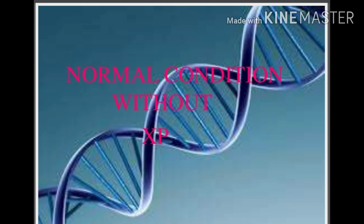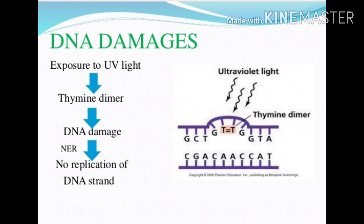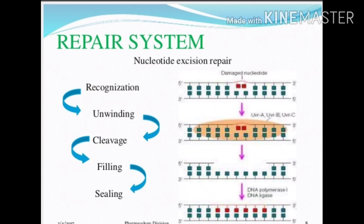Under normal conditions, when light falls on skin tissue it induces thymine dimer formation. Thymine dimer formation is a DNA impairment — such damaged DNA is incapable of undergoing normal replication. The thymine dimer must be removed from that DNA. This induction of thymine dimer as a result of UV light exposure is called DNA damage, which must be properly removed for the DNA to undergo normal replication.